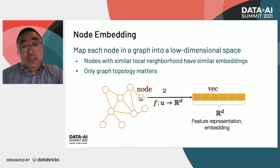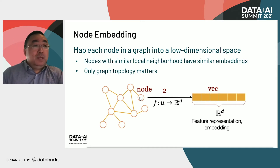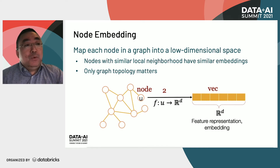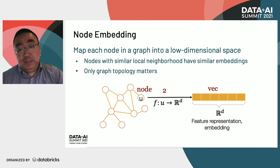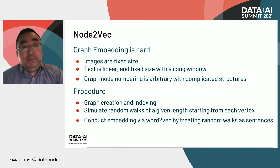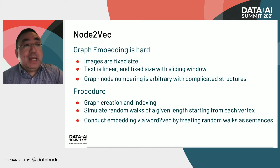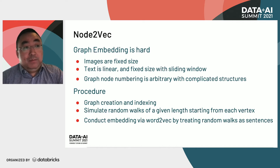Node embedding is a common type of graph embedding and maps each graph node to a low-dimensional space. In this context, nodes with similar local neighborhoods will have similar embeddings, and only graph topology matters in the embedding process, as shown in the diagram. However, graph embedding is very complicated. Think about image embedding — image sizes are fixed. In word embedding, text is linear and has fixed sizes with a sliding window. But in graph embedding, graph node numbering is arbitrary with a very complicated structure.